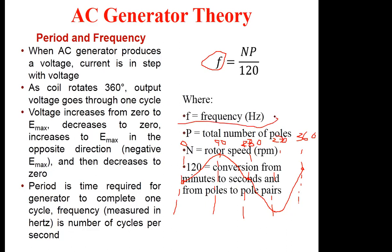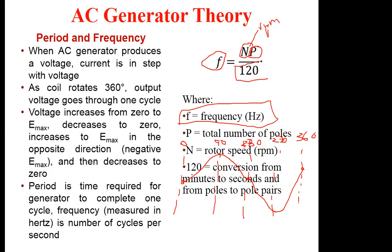The frequency of the generated EMF is given by f = NP / 120, where N is the rotor speed in RPM (revolutions per minute), and P is the number of poles in the machine, divided by 120. The 120 is used to convert from minutes to seconds and from poles to pole pairs.